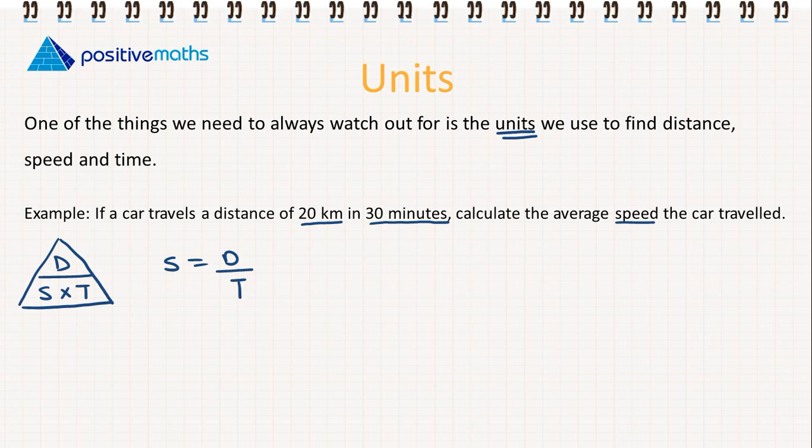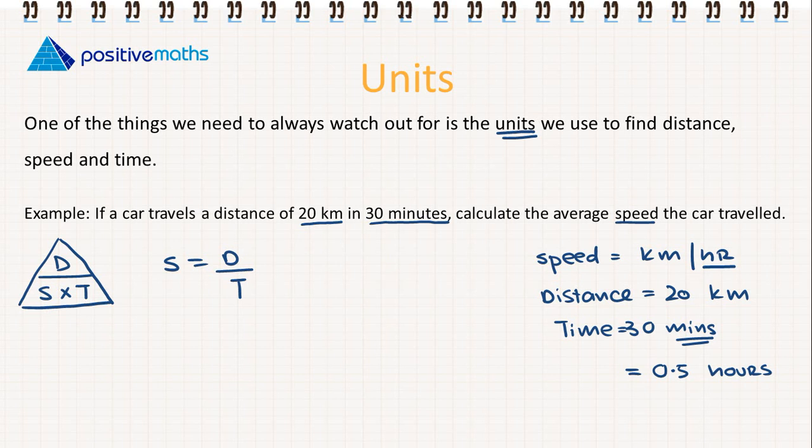We're also going to write down the units for speed. The units for speed are kilometres per hour. Let's look at the information we're given. We're told that the distance is equal to 20 kilometres, and we're told that the time is equal to 30 minutes. So this is really what we have to watch out for. We are given the time in minutes, but in order to find speed, we need the units to be in hours. So we're going to change our time to hours instead of minutes. So instead of 30 minutes, we're going to have 0.5 hours. This is a really important step. Otherwise, we're going to have speed in kilometres per minute. That's not what we want.